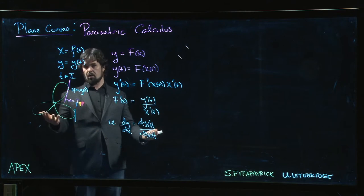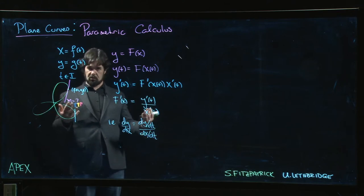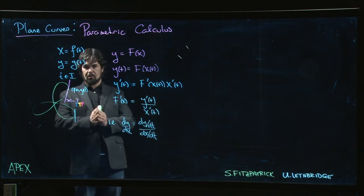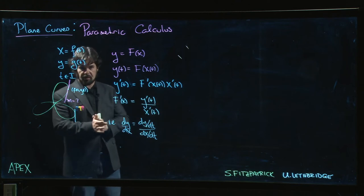So now we know how to compute slope for a parametric curve—slope of the tangent line—which means we can find tangent lines to parametric curves. We'll explore that in a few examples coming right up.